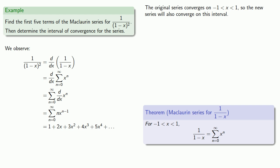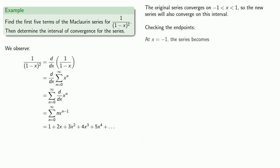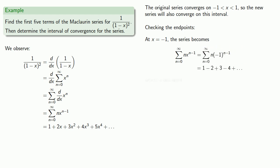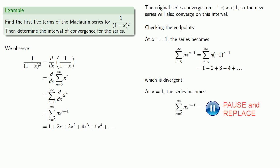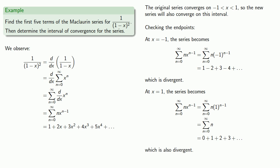We do need to check the endpoints. At x equals negative 1, our series becomes a divergent series. So the interval of convergence does not include either endpoint, and we can say that the series converges over the open interval from minus 1 to 1.